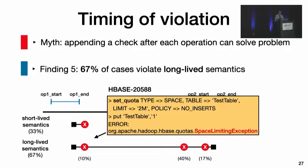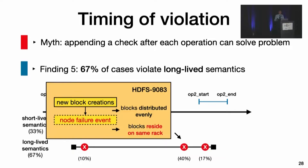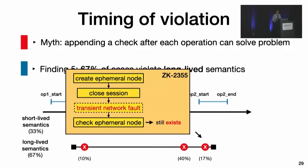The violation of long-lived semantics can happen at the start — for example, a user sets an HBase space quota but it does not take effect. The violation can happen in the middle — for example, when HDFS blocks are created the placement policy is initially honored, but after some node failures all replicas reside on the same rack. Or the violation happens at the end, like the ephemeral node case we discussed. Therefore, only having one short check after each operation can miss many violations of long-lived semantics.